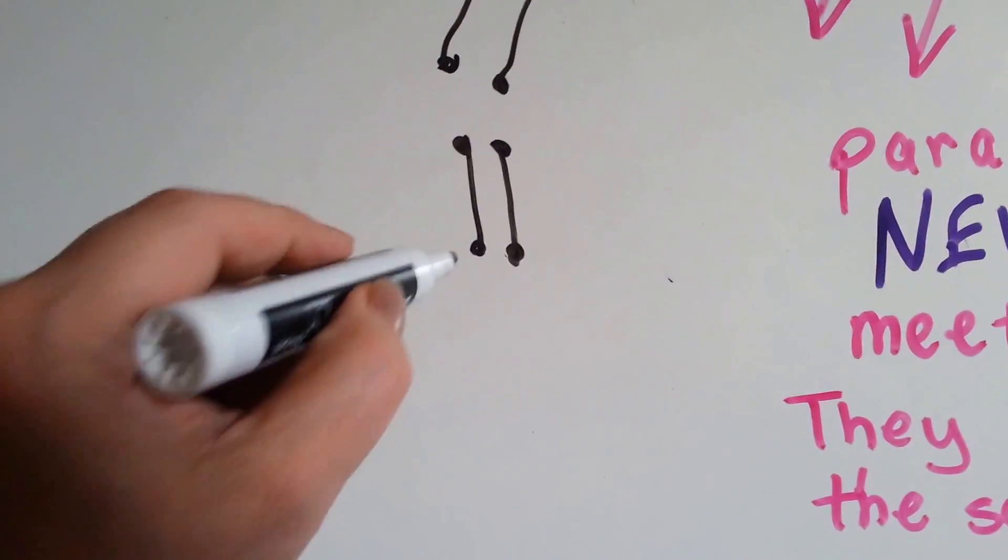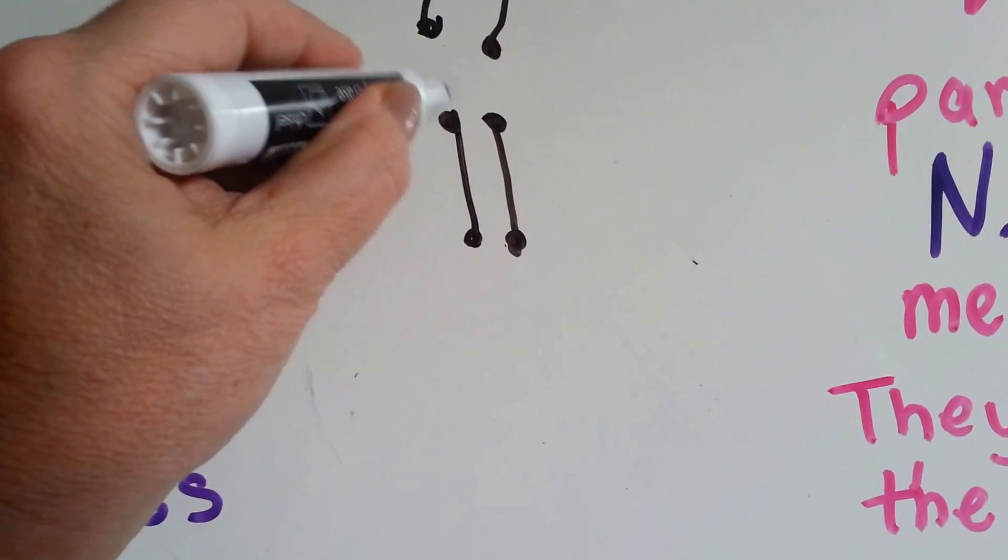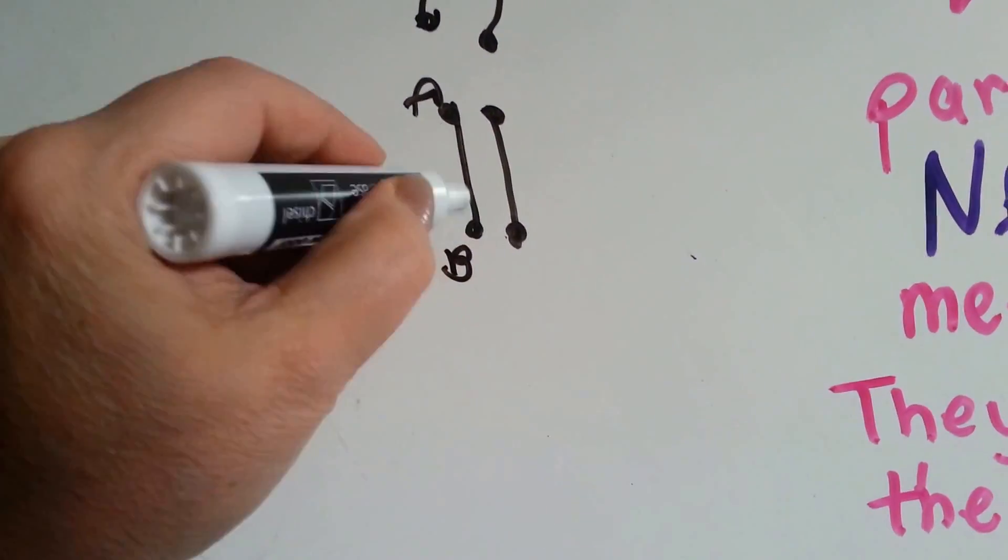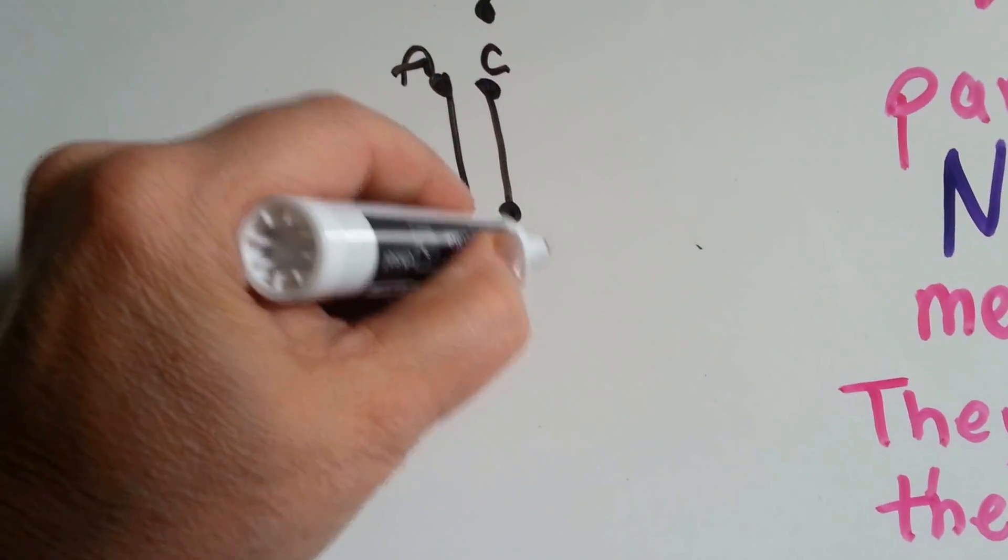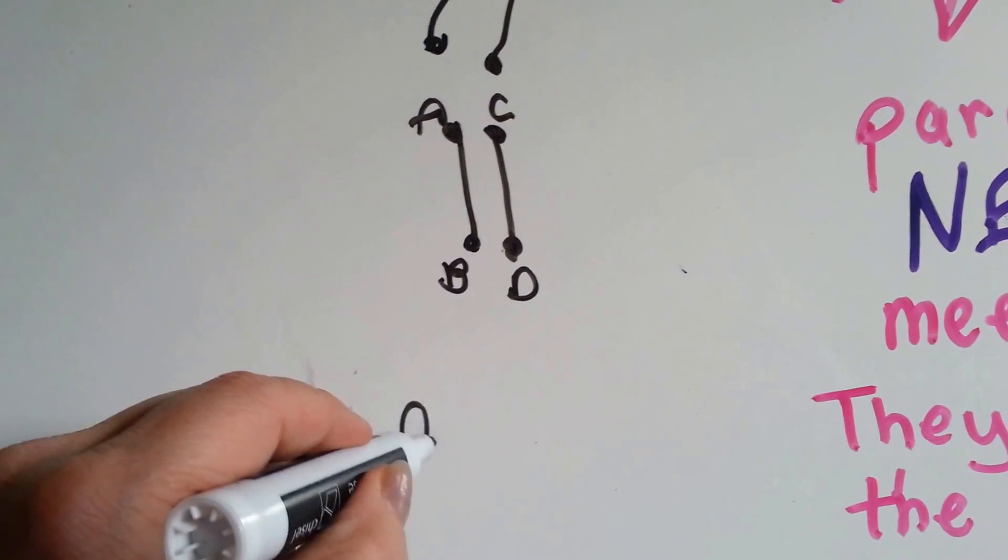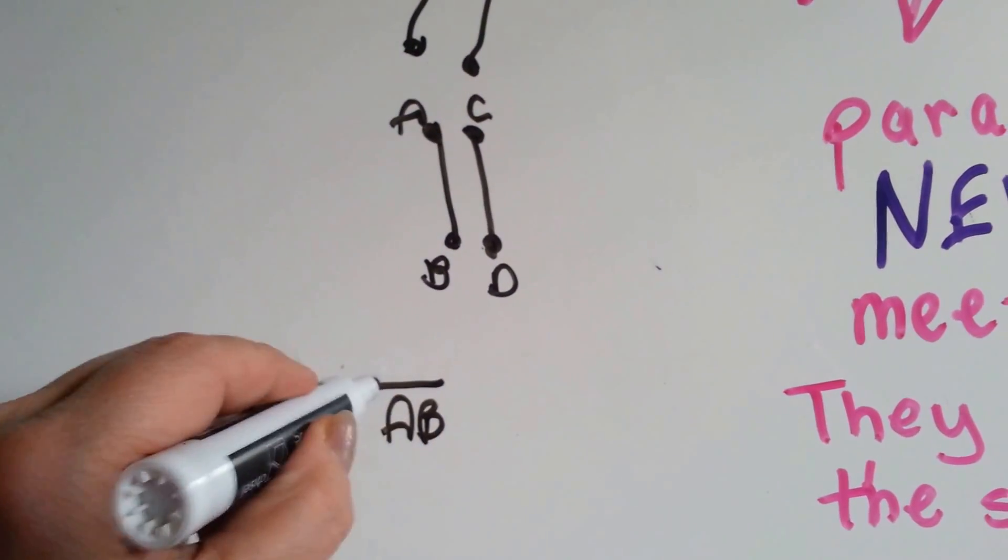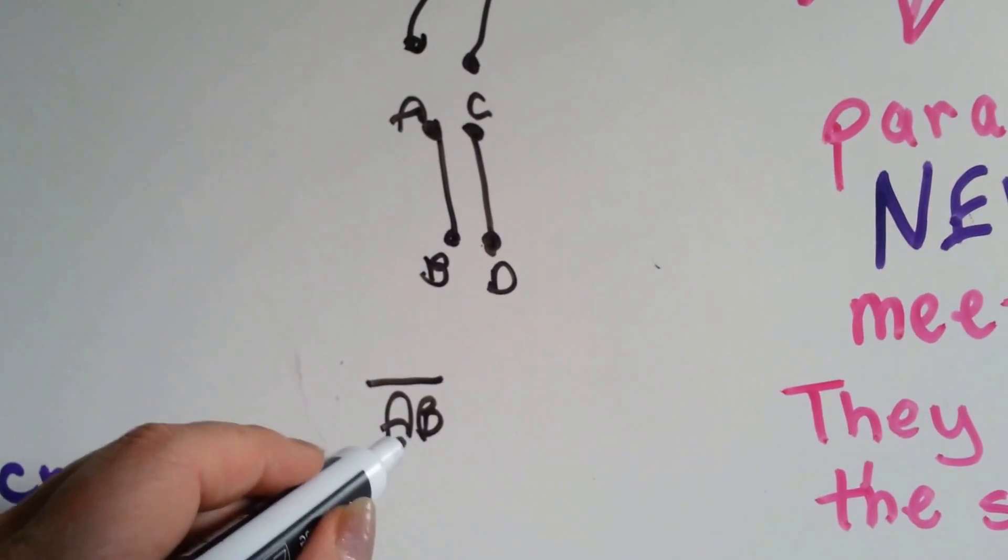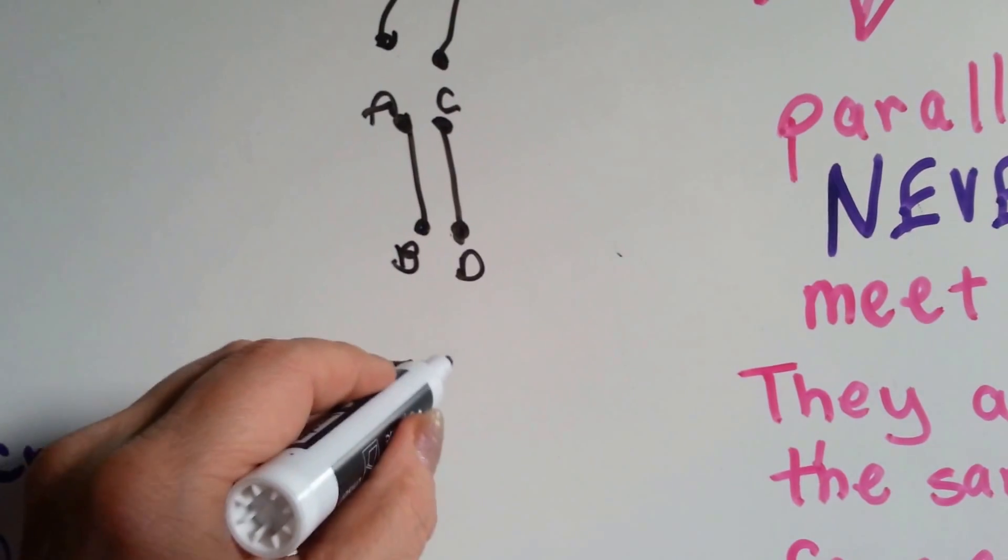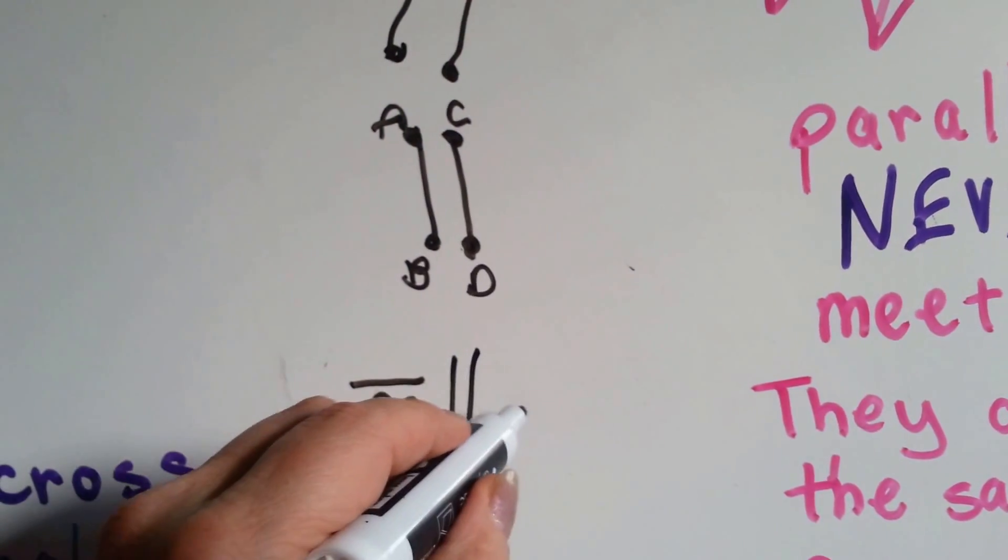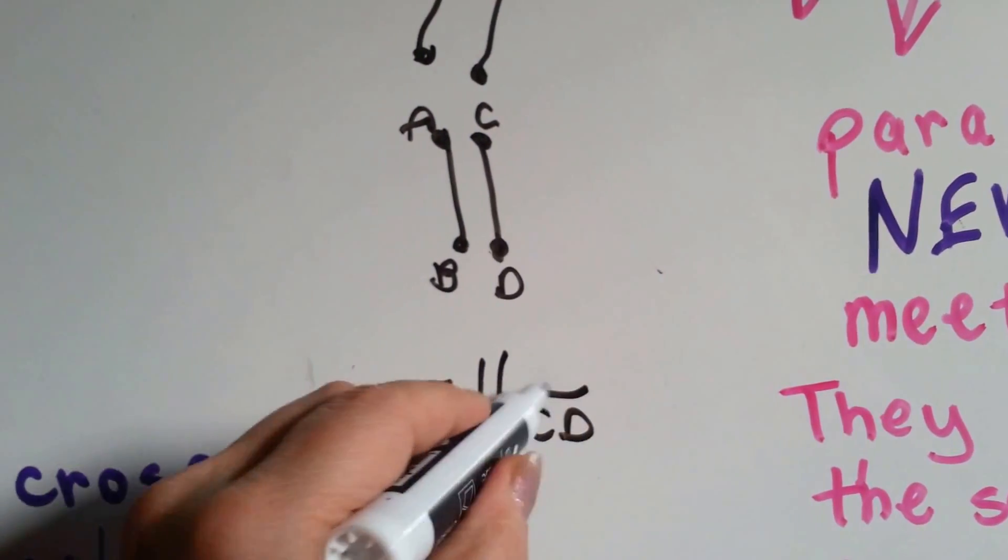If you had these two line segments and this was line segment AB and this was line segment CD, you could say line AB, and you draw a little line on top of it to say that it's line AB, is parallel to CD. That's how people write it.